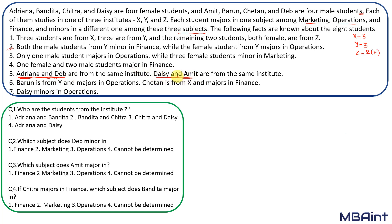This pair would either be from X or Y, which means X will have two males and one female, and Y will also have two males and one female. Since each of X and Y has three students, we cannot have two pairs in one institute. This is the only possible combination.